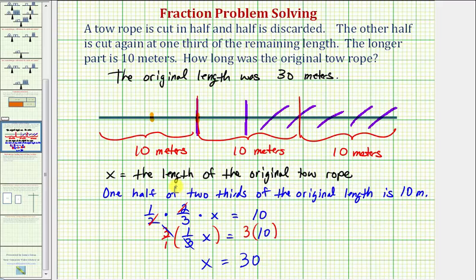And again, x is the length of the original tow rope, so we get the same answer. The original length was 30 meters.